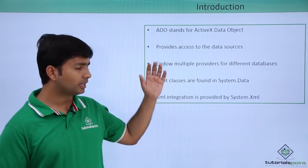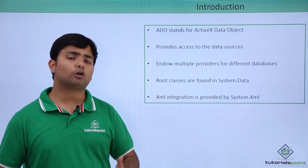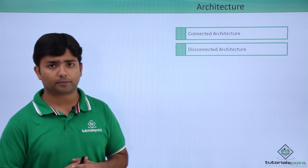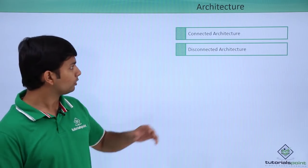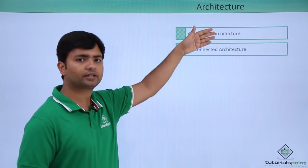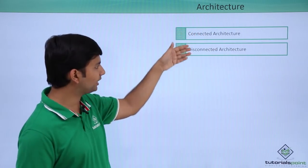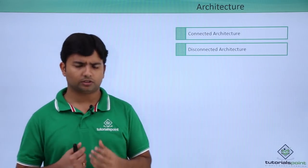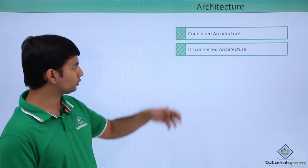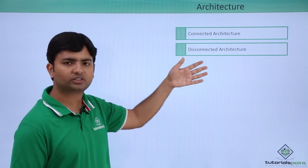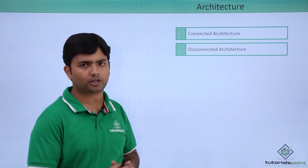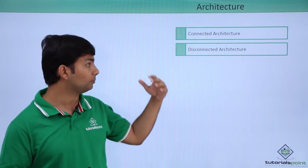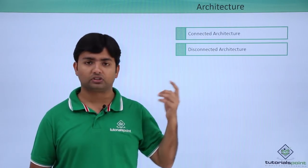For ADO.NET, there are two architectures that can be used for implementation. The first is connected architecture and the second is disconnected architecture. In this video series we will cover both of these architectures in depth, but let's have a brief introduction before getting started with them.